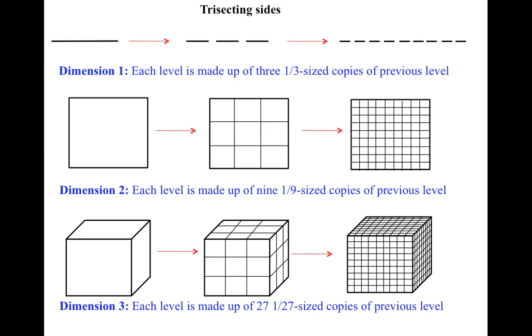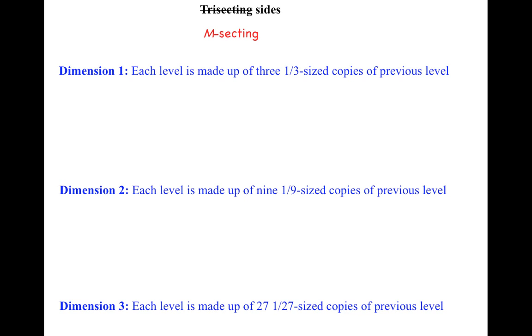So in general, instead of bisecting or trisecting, we can m-sect. We can divide each side into m equal size parts.